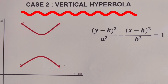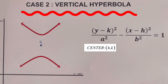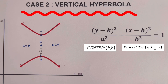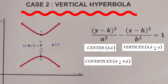Now let's look at the center of this hyperbola. This is the center C. Now let's draw the two vertices. The distance from the center to the vertex is A, which tells us that the coordinate for the two vertices of this vertical hyperbola is H comma K plus or minus A. We also have two co-vertices. The distance from the center to the co-vertex is B, and the coordinate of the two co-vertices would be H plus or minus B, comma K.